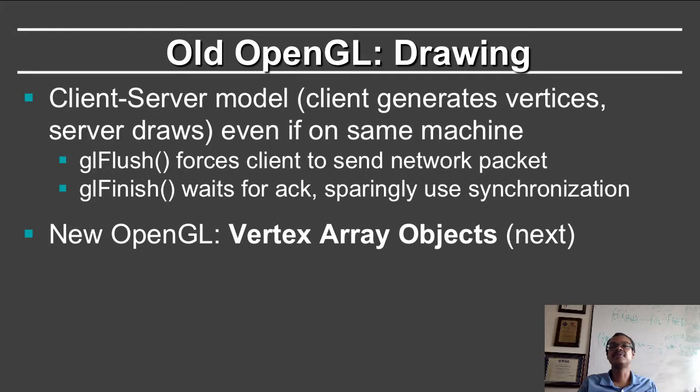I talked about clients and servers. In fact, old OpenGL operates on a client-server model, even if the client and server are on the same machine, which is typically the case. The client, which is the user program, generates vertices; the server draws them. There are a couple of synchronization commands. glFlush forces the client to send network packets for drawing, and glFinish waits for an ACK and is sparingly used for synchronization. In modern OpenGL, all of this has been replaced using the notion of vertex array objects, which we will discuss next.